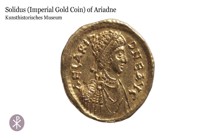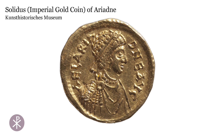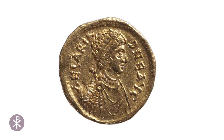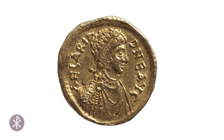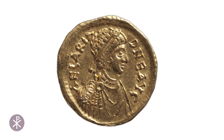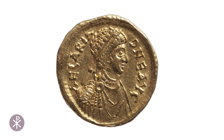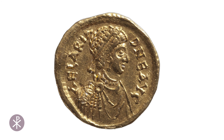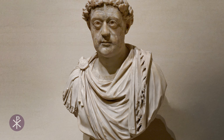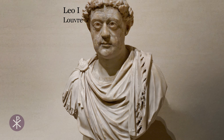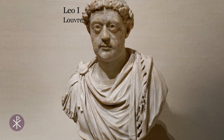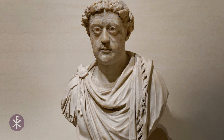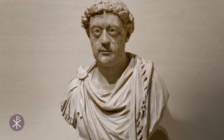Ariadne was the daughter of Emperor Leo I and Verena. She was the wife of two emperors, the mother of one emperor, and even the sister of a usurper emperor. Since her father, Leo I, had no sons, her marriages served to perpetuate the dynasty.